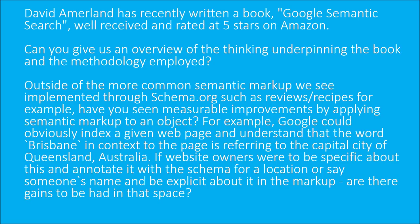Outside of the more common semantic markup we see implemented through schema.org, such as reviews and recipes, have you seen measurable improvements by applying semantic markup to an object? For example, Google could obviously index a given web page and understand that the word Brisbane in context refers to the capital city of Queensland, Australia. But if website owners were to annotate it with the schema for a location or someone's name and be explicit about it in the markup, are there gains to be had in that space?